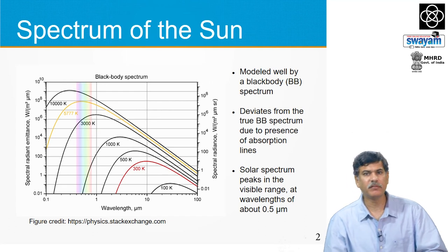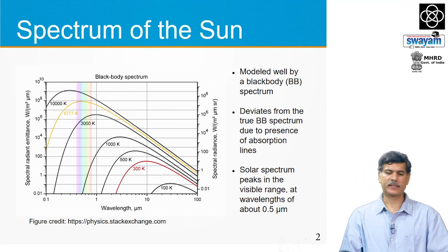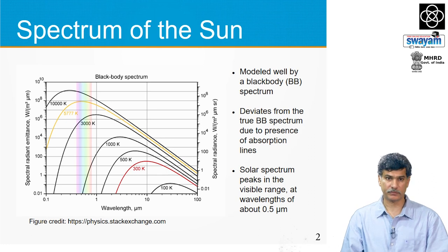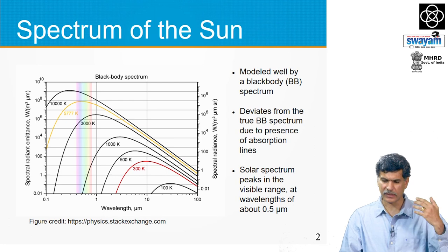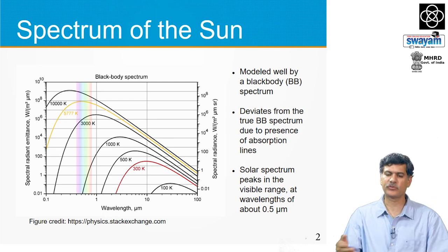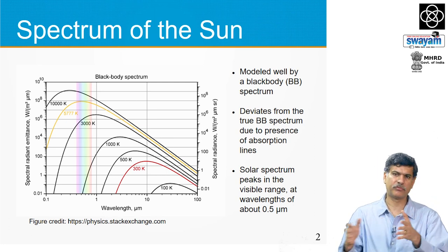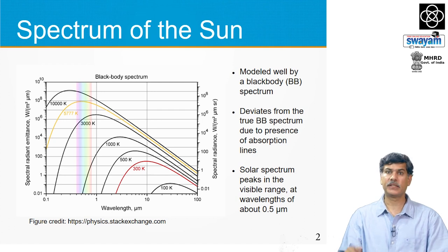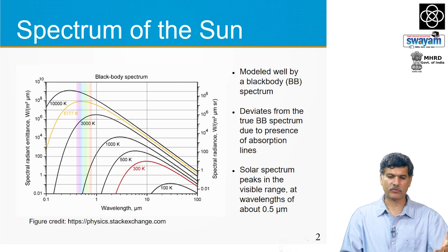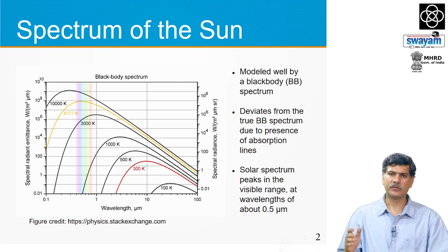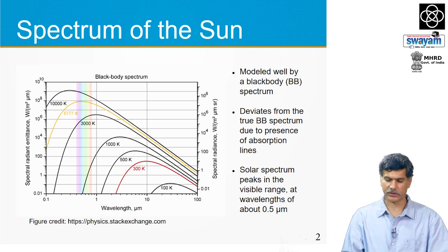Let us start from a familiar perspective. As you all know, the spectrum of our sun is well modeled by that of a black body — in fact that is true of all stars. In reality the actual spectrum of the sun differs from that of a black body because of the presence of various absorption lines, but it is still a very useful model. In the case of our sun, given its temperature is about 5800 Kelvin, the peak of the spectrum lies in the visible range at about half a micrometer.